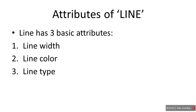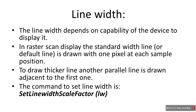Now attributes of a line — first we'll start with line. There are three basic attributes for line: first is line width, second is line color, third is line type. The line width depends on the capability of the device to display it. Not all devices can handle big widths. The default line is drawn with one pixel at each sample position — that is the default thickness.